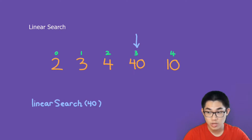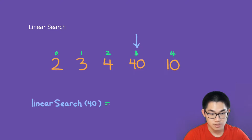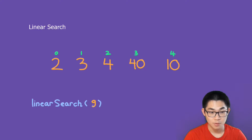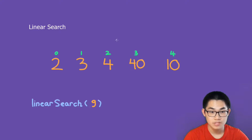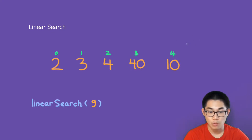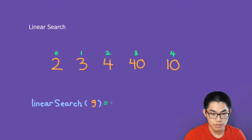So what we do is return the index, which is number three. The result of this linear search is three. How about number nine? We see that it's not in this array. We start at the first element — is this nine? No. We check each element and reach the end of the array without finding nine. In this case we return negative one, which means it's not inside the array.